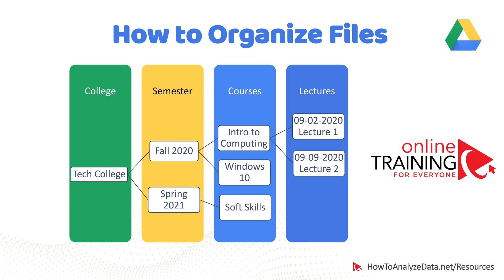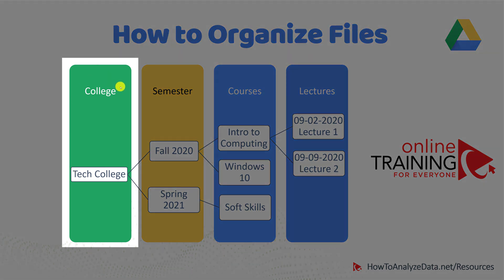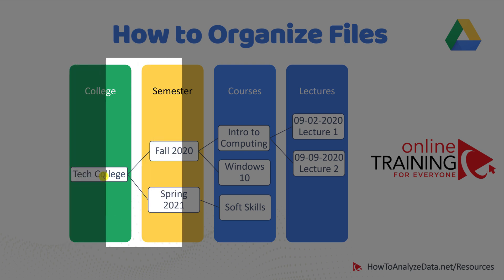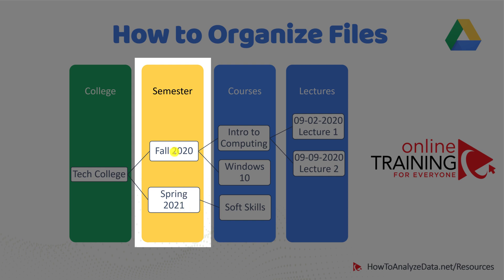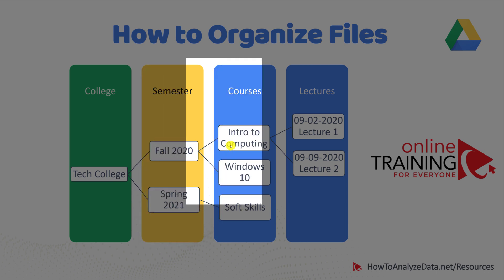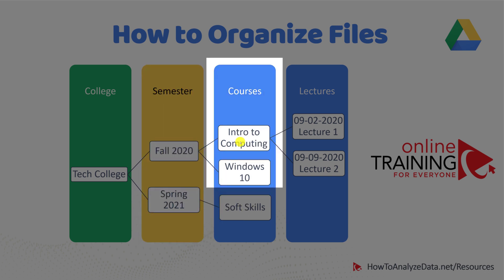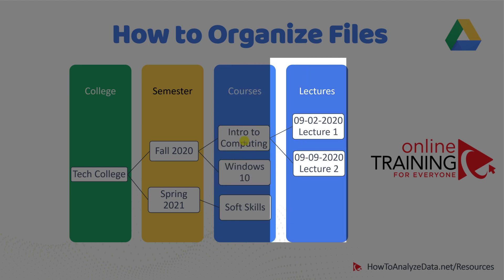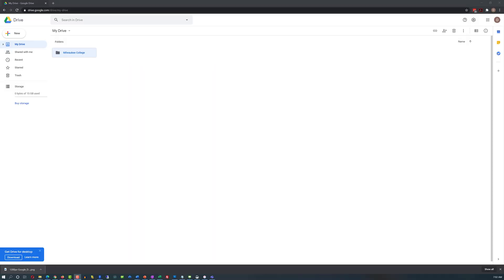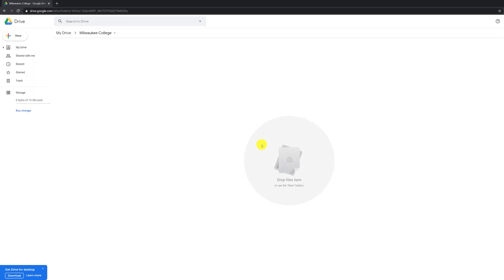Google Drive supports a hierarchical folder structure. For example, you might be studying at a technical college — that might be your root folder. You might have multiple semesters: fall 2020 and spring 2021. In fall 2020, you might be taking two classes: Introduction to Computing and Windows 10. And in Introduction to Computing, you will have multiple lectures. You can replicate this structure right on Google Drive by clicking on a folder and creating subfolders inside it.